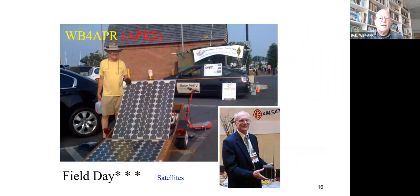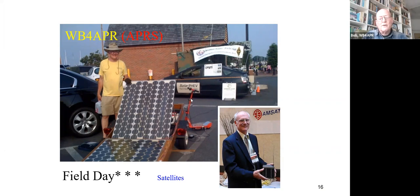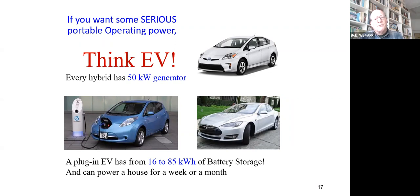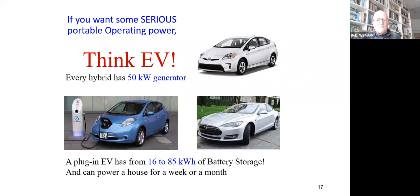This shows me typically at Field Day. In the lower right I'm holding one of the amateur satellites I built over 15 years at the Naval Academy. When I go to Field Day I take along a solar trailer to power everything. If you really want to talk about portable operating power, you need to think about an electric vehicle. Even a hybrid has a 50,000-watt generator — a ham's dream — that goes with you everywhere. A battery electric car like a Leaf has anywhere from 16 to 85 kilowatt-hours of battery storage.